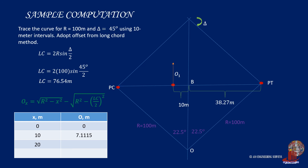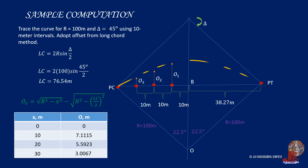At 20 meters, OX is measured as 5.5923 meters. And at 30 meters, OX is computed as 3.0067. After laying out these distances perpendicularly from the long cord, draw out the simple curve.